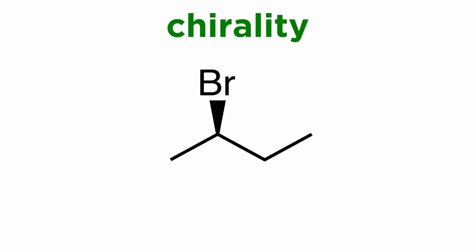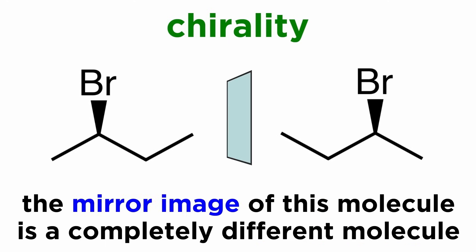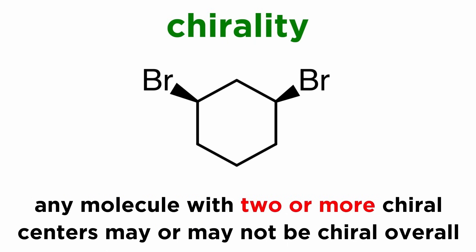Let's first consider molecules with differing numbers of chiral centers. If a molecule has precisely one chiral center, it is definitely a chiral molecule — it will have a mirror image that is a different molecule. However, if a molecule has two or more chiral centers, it may or may not be chiral overall, depending on whether there exists some internal symmetry.